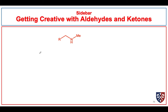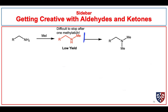Now let's do a little bit of a sidebar where we get creative with aldehydes and ketones. Imagine we want to make a secondary amine. We might think of making it by starting with a primary amine and reacting with methyl iodide. The problem is that this is difficult to stop after one methylation — the initial product is much more reactive towards methyl iodide than the starting primary amine, so it reacts very quickly to form the tertiary amine, and the desired product occurs in low yield. We can be a little bit tricky and use our knowledge of the reactions of aldehydes and ketones to get a higher yield of this reaction.